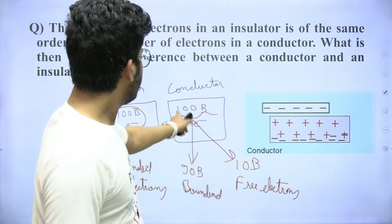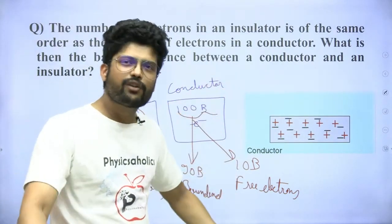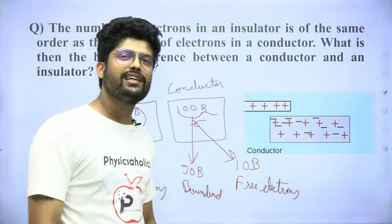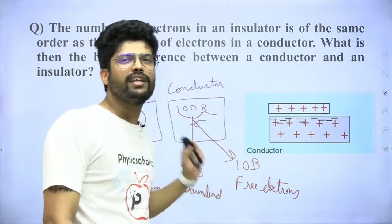I think it's clear that the difference is free electrons. Free electrons are the ones which can move, bounded cannot.